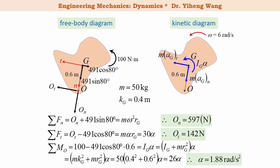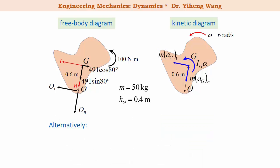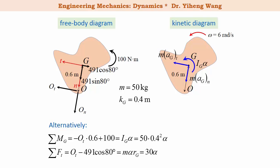This completes the problem, but let's try an alternative approach. Instead of summing moments about O, we sum about G. In this case, the weight has no moment about G, but O_t does have a moment. The equation becomes: moment of O_t about G = I_G·α, where I_G = m·k_G². This equation has two unknowns — O_t and α — but combined with the tangential force equation we get two equations and two unknowns, solvable simultaneously for the same results. Either approach is valid; the choice is yours.